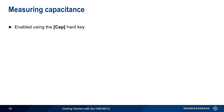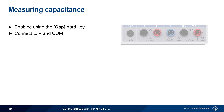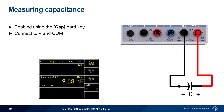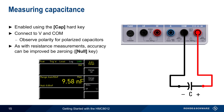Capacitance measurements are enabled using the CAP hard key. Connections to the capacitor under test are made using the V and COM jacks, and results are displayed in units of farads. Be sure to observe the polarity when measuring polarized capacitors. As with resistance measurements, capacitor measurement accuracy can be improved by zeroing – that is, by shorting the leads and pressing the NULL hard key before making measurements.